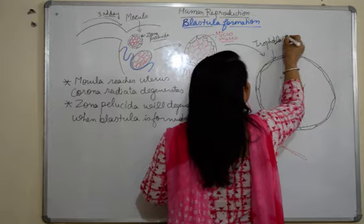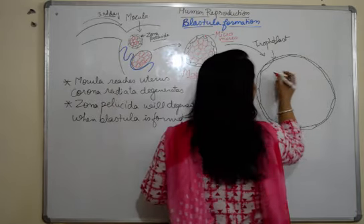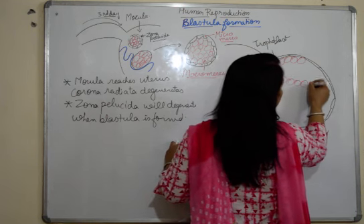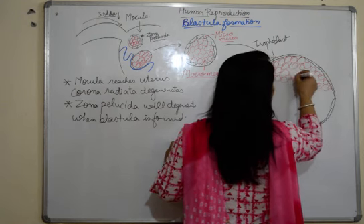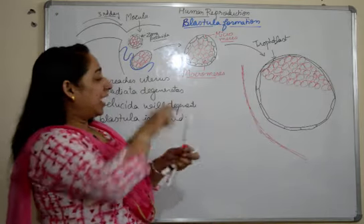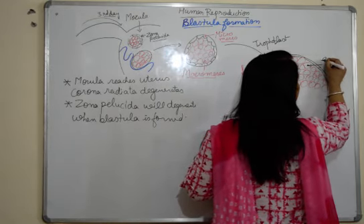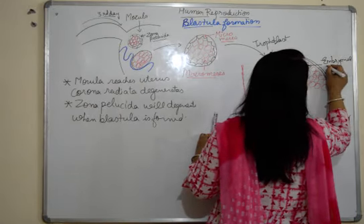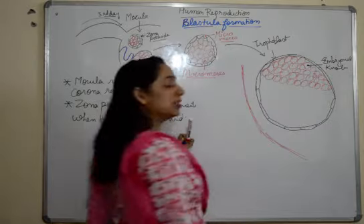Now what happens to the macromeres: the macromeres will adjust themselves and will start moving towards one pole. They will make a cluster of cells at one pole of the blastocyst. This structure which is formed is known as the embryonal knob. So the micromeres form the trophoblast, and the macromeres adjust towards one pole to form the embryonal knob.